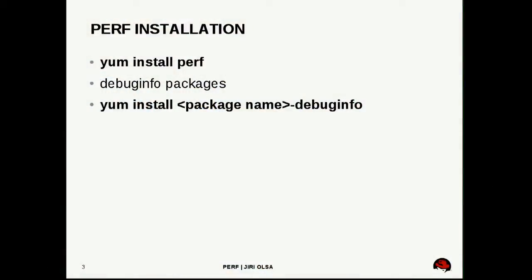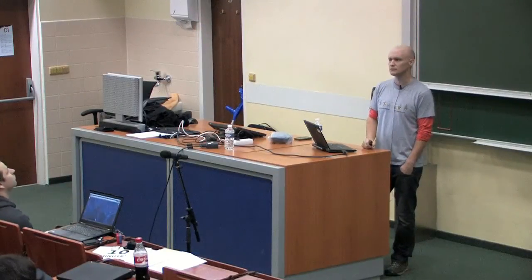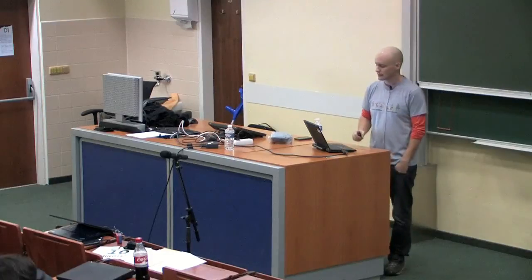Let's start with the basics. Perf comes as a simple package. On my system, which is Fedora, it's as easy as running 'yum install perf'. You'll get the perf binary after installing this. When installing packages, it's worth mentioning debug info packages. Perf is very tightly bound to debug info RPMs, because most of the perf output is from within the binaries — things like function addresses. We can translate these addresses to show source code or function names. So if you profile an application, make sure debug info is installed as well.